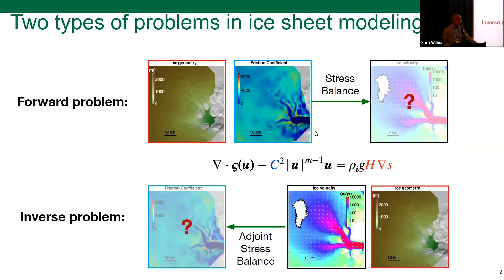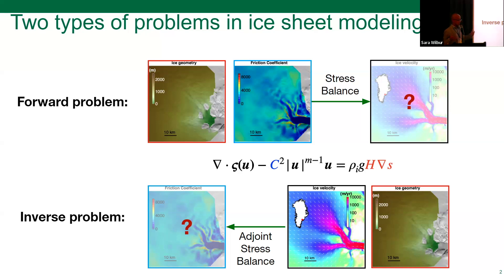That is what we call the forward problem. We need boundary conditions — specifically the basal friction coefficient — and we solve the PDE to get the ice velocity. The so-called inverse problem is: knowing the ice geometry and the flow velocity, can we infer the basal condition? In the ice community, the basal condition is not directly observable, so we need numerical methods to infer it from observations.